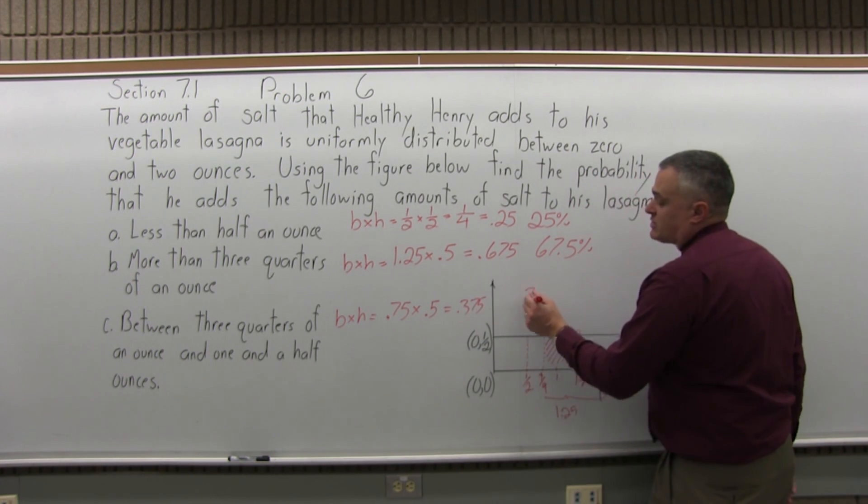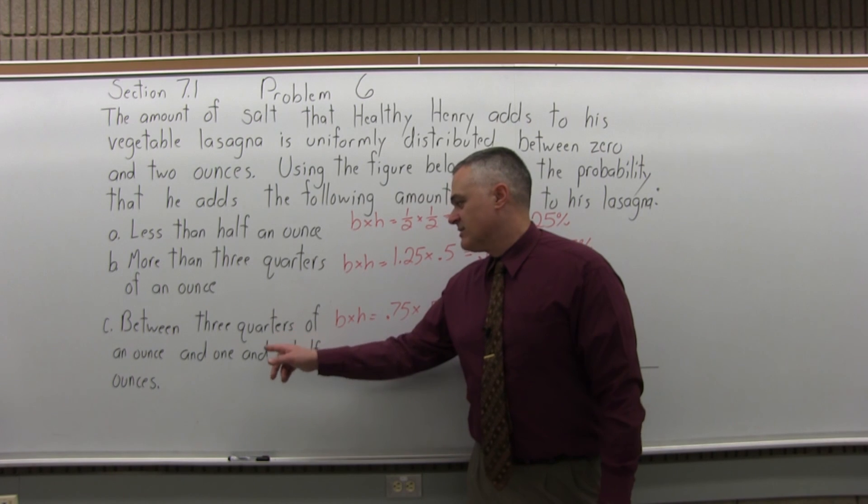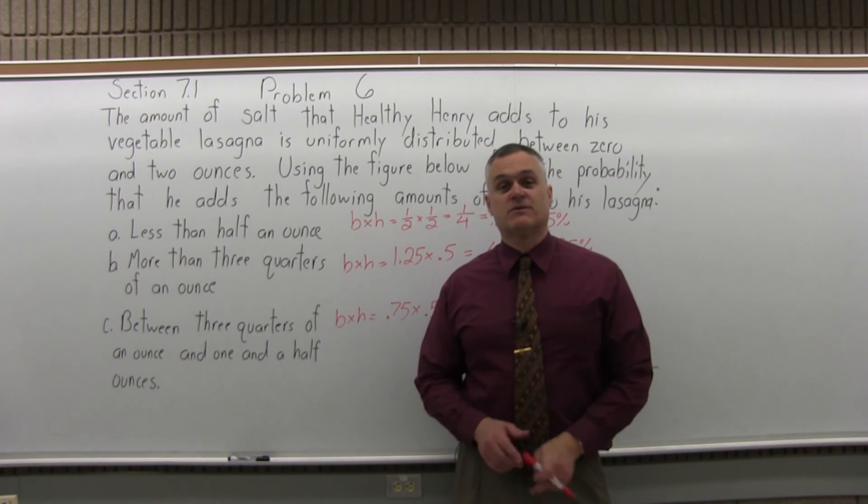Which is almost 38%, 37 and a half percent probability that Healthy Henry would add between 3 quarters of an ounce and 1 and a half ounces of salt to his vegetable lasagna.